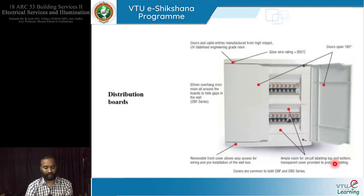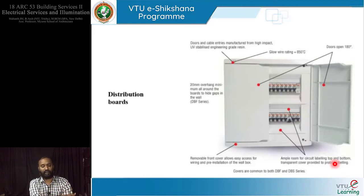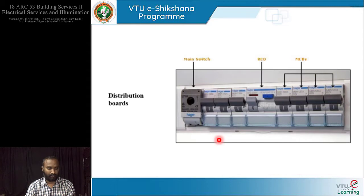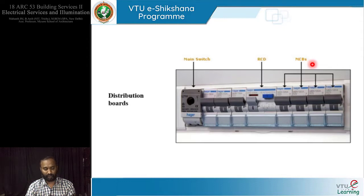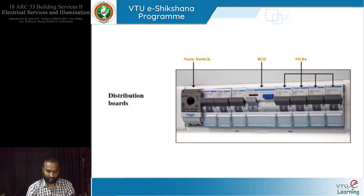The door opening varies — some open from the top, some to the side, depending on the capacity and number of circuit breakers. The distribution board can be as large or as small as required. The main switch is going to be a bit different from the others. We have several MCBs — miniature circuit breakers — sitting alongside, and also residual circuit devices.